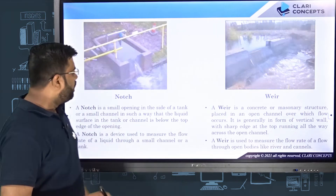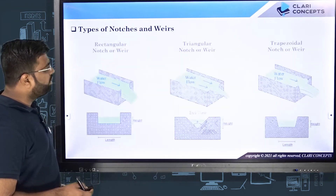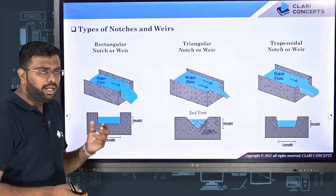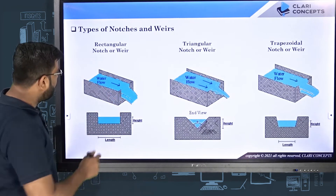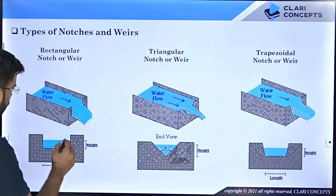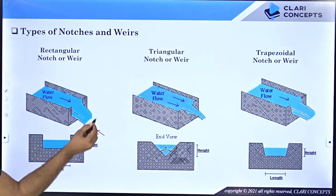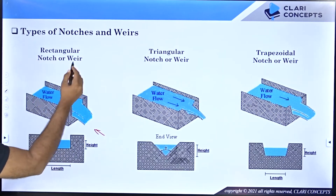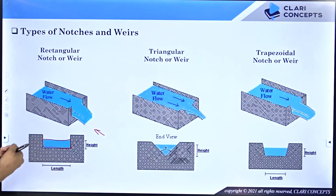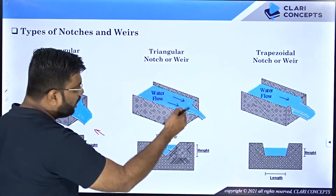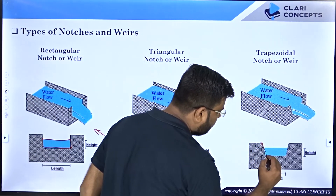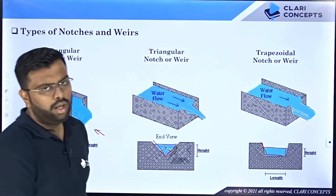We have seen that there are three different categories of notches depending on the shape of the fluid in the channel. One is a rectangular notch, one is a triangular notch, and another is a trapezoidal notch. From the front view, when you have a rectangular notch, the water takes the shape of a rectangular section. When you have a triangular notch or V-notch, the water takes the shape of a triangle. And when you have a trapezoidal notch, the water takes the shape of a trapezium.